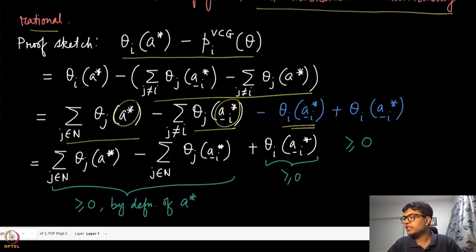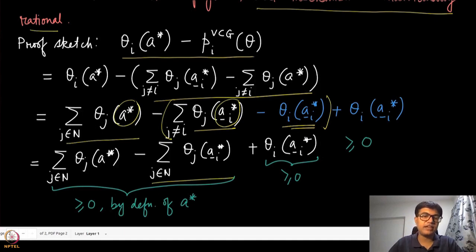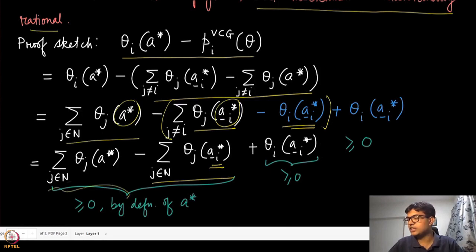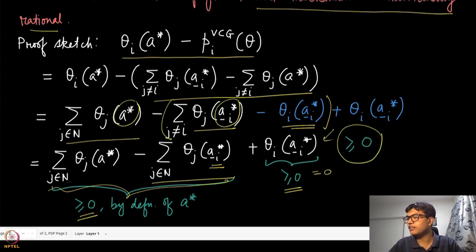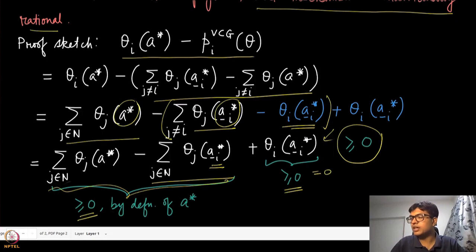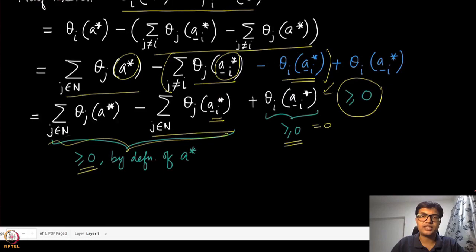Since theta_i of null equals zero, this added term is exactly zero. Clubbing the terms together, we get the sum of valuations of all agents including agent i under A-star, minus the sum of all agents' valuations under A-minus-i-star. By definition A-star maximizes the total valuation sum, so this difference is non-negative. The second term theta_i of A_i-star is also non-negative since we are in the goods setting. Therefore the utility is non-negative. Since agent i was arbitrary, this holds for all agents, proving VCG is individually rational.